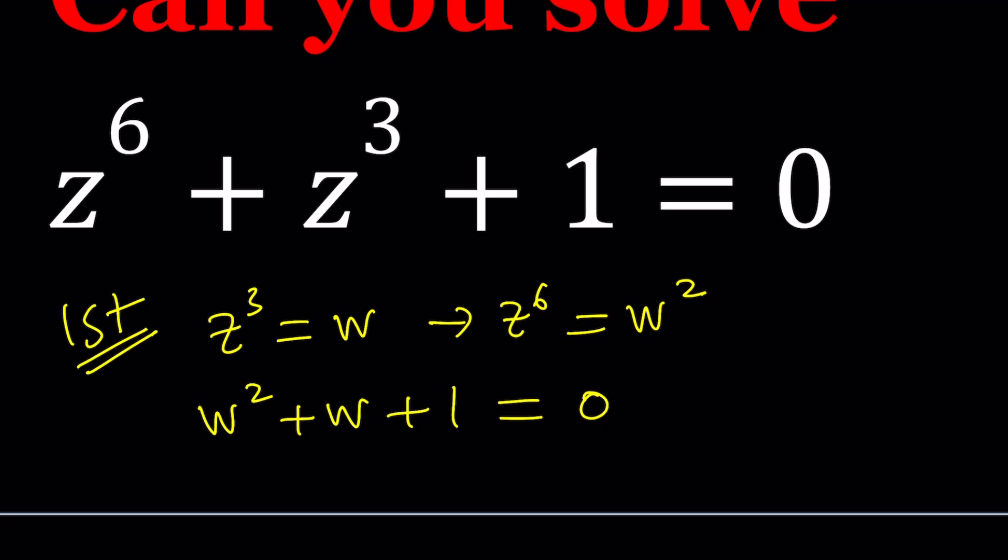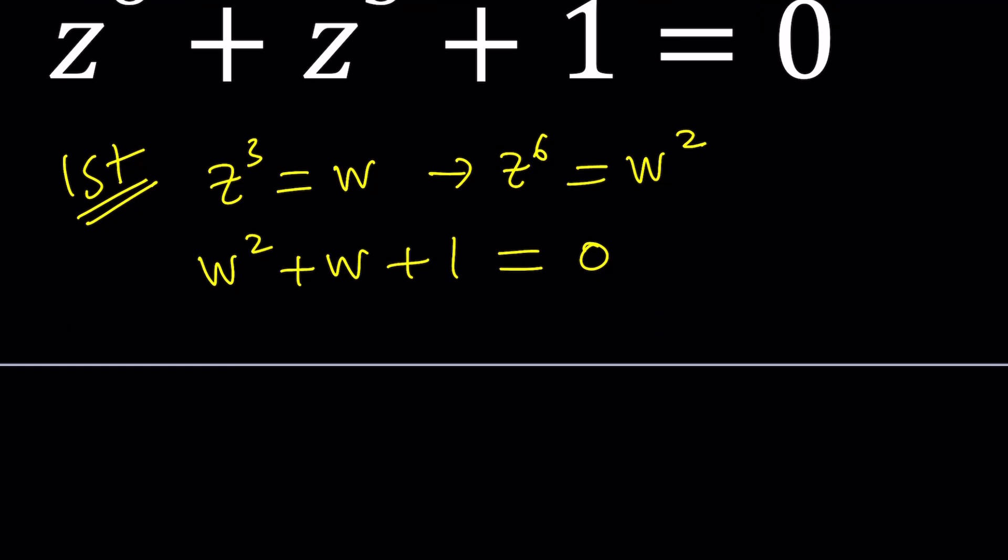Now, you hopefully recognize this equation because it's very special. This equation actually gives you the cube roots of one, but not one. Just the complex cube roots of one besides one. And how can you show that? Multiply both sides by w minus one.